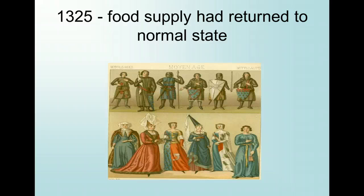During the next few years, the European economy slowly improved, and agricultural and manufacturing production eventually reached pre-famine levels. This return of normalcy was suddenly ended in the year 1347, by a disaster even worse than the Great Famine.